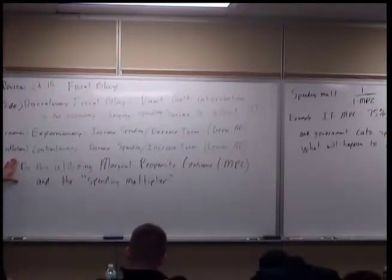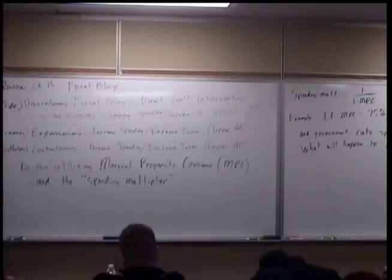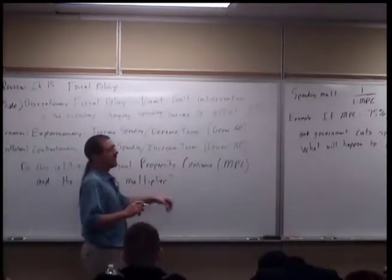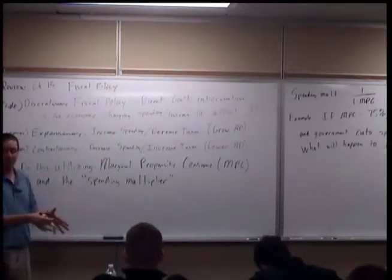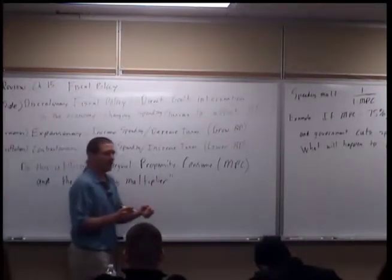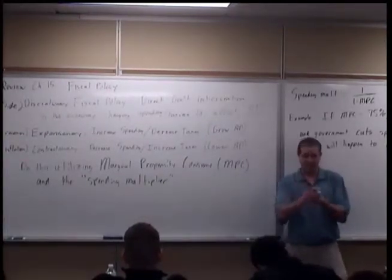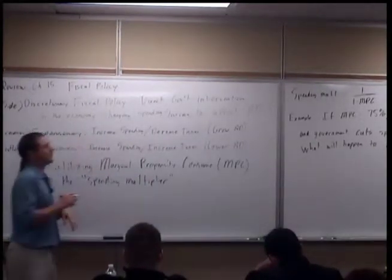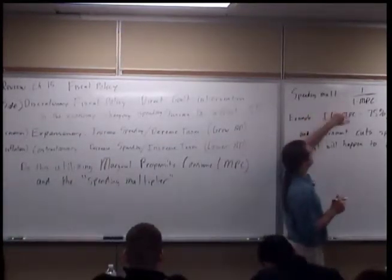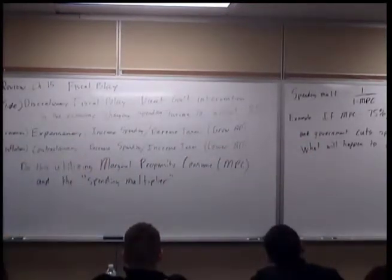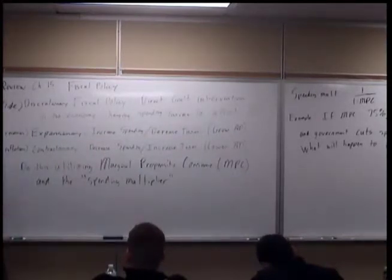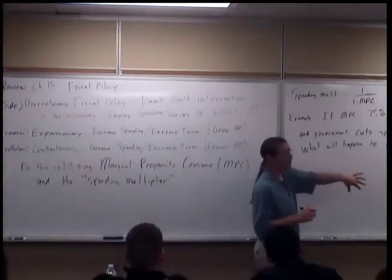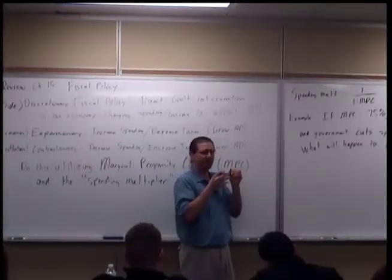The way the government decides how much it wants to affect aggregate demand is by using the marginal propensity to consume and the spending multiplier. The marginal propensity to consume is the percentage of each dollar you receive that you will spend on real GDP. If someone gives you a dollar, how much of it are you going to spend on GDP and how much are you going to save? This equation gives you the spending multiplier — a number you multiply by spending.